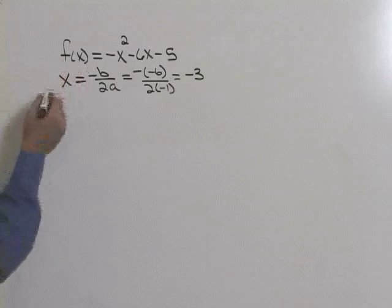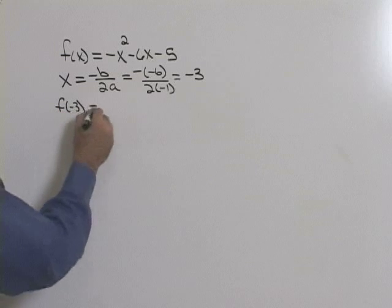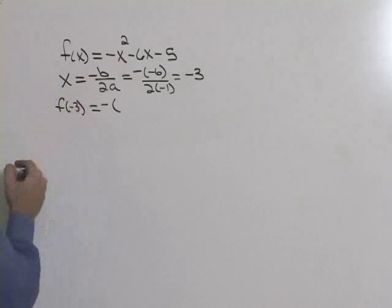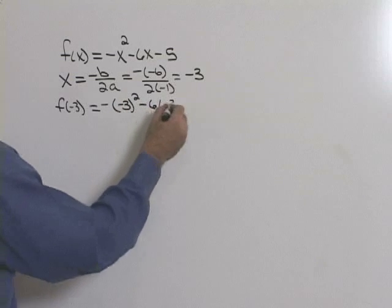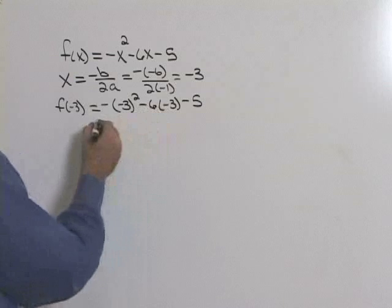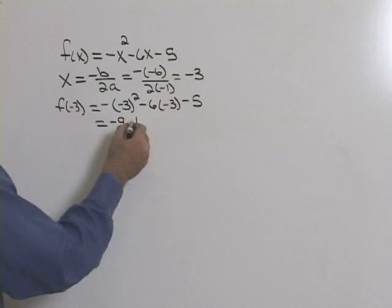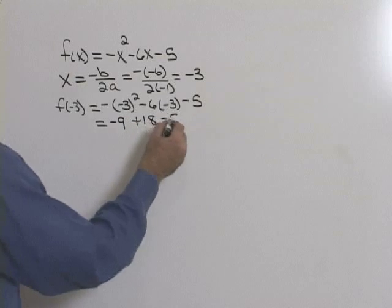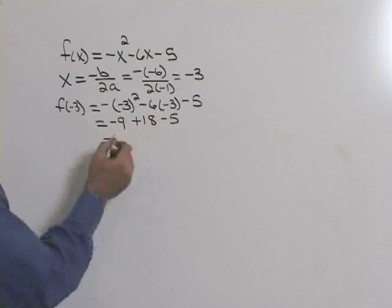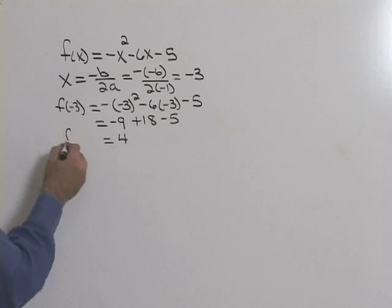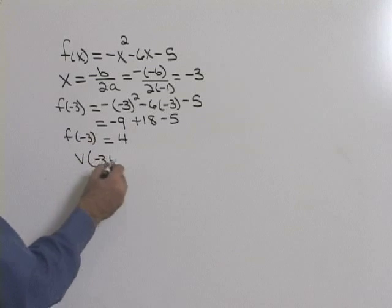Let's find the y-component or the f(x) component. We want to find f(-3), which we'll be plugging -3 in place of x. So we'll have -(-3)² - 6(-3) - 5. This will be 9, but that negative will make it -9 + 18 - 5. We'll have -9 + 18 is 9, minus 5 is 4. So that's f(-3). So our vertex will be (-3, 4).